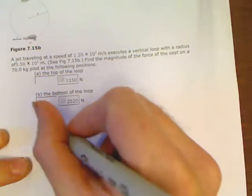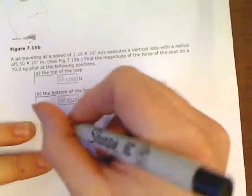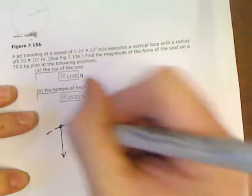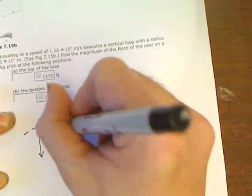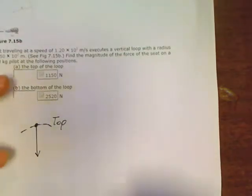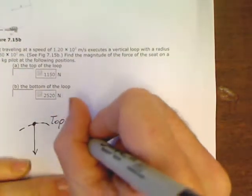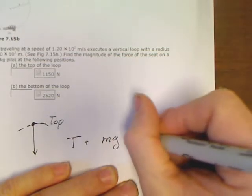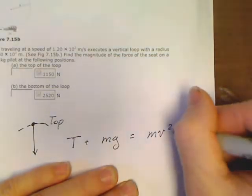We've even established a surefire equation for the top of a circle. Do you remember that equation? For the top of a circle, I gave you T plus mg equals mv squared over r.